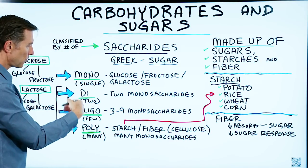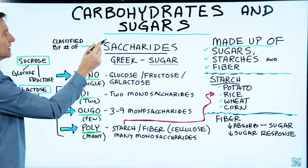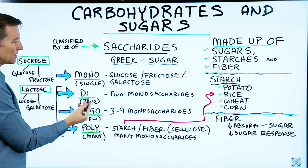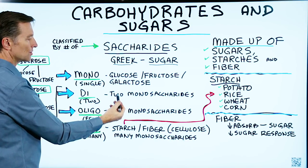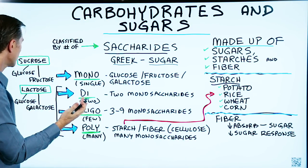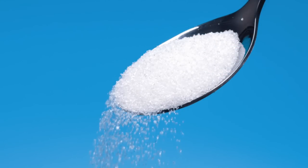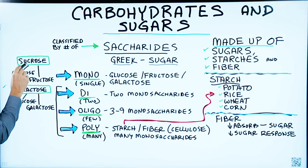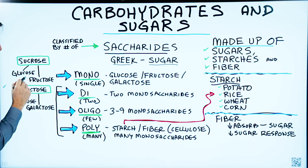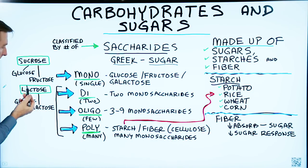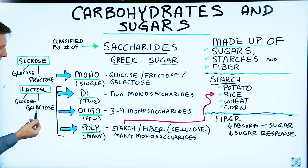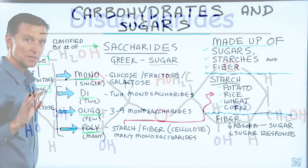Next, and there are four types, is disaccharides. Di means two — two monosaccharides. An example of a disaccharide would be table sugar, or sucrose — that's the same thing. Sucrose is composed of two monosaccharides: glucose and fructose. Another example would be lactose, milk sugar, which is composed of glucose and galactose.